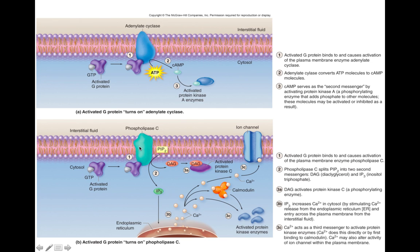Phospholipase C is another enzyme, and its job is to take PIP2 and cleave it. As you cleave PIP2, it will split into DAG — diacylglycerol — and IP3, inositol triphosphate. DAG can then activate protein kinase C, which will phosphorylate a protein and activate it.